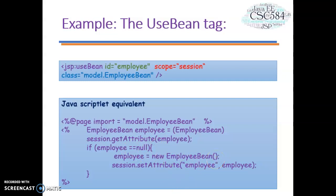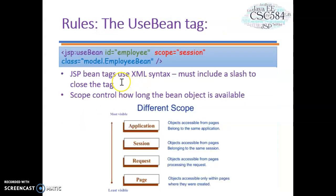There are also a few rules for the useBean tag. JSP bean tags use XML syntax — you must include a slash to close the tag. The scope controls how long the bean object is available, and there are four types: application (accessible from pages belonging to the same application via the servlet context object), session (accessible from pages belonging to the same session), request (accessible from pages processing the same request), and page (accessible only within the current page where it was created).